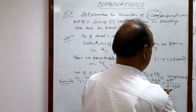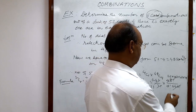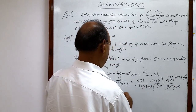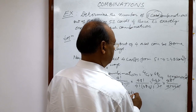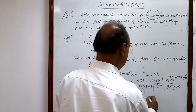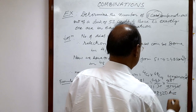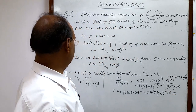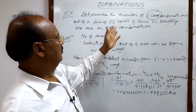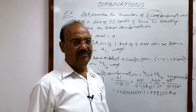4 factorial equals 1 × 2 × 3 × 4, which is 24. So we multiply 4 × 45 × 46 × 47 × 48, divided by 24. After this multiplication we get 778320. This is the total number of ways of selecting 5 cards, or making 5 card combinations out of 52 cards, under the given condition that there is exactly one ace.